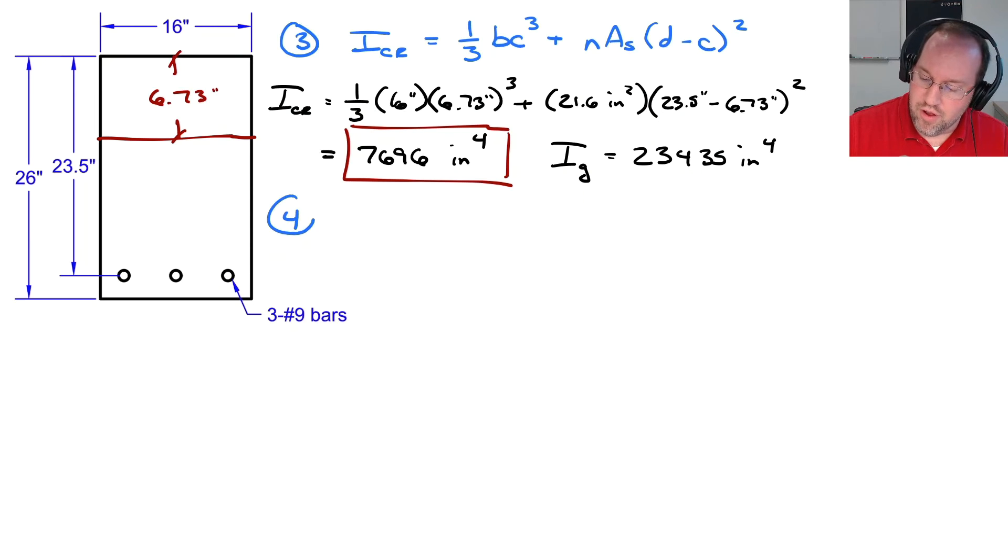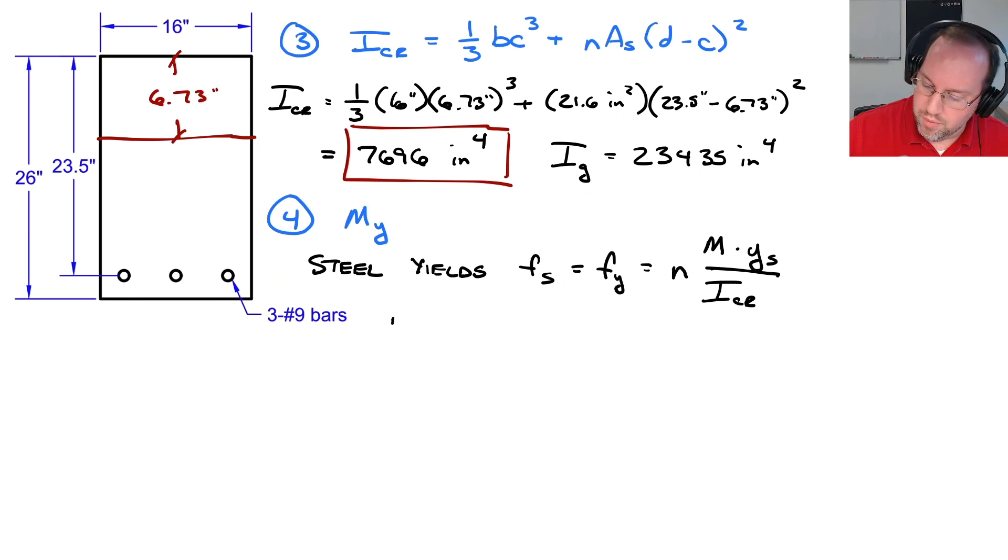Now that I have my moment of inertia, I want to find my yield moment M sub Y. So to do this, we need to consider what that yield moment represents. So the yield moment represents the time when my steel yields. So therefore, my stress in my steel Fs is equal to Fy. And we know that the stress in the steel for a linear section is N times the moment times the distance down to that steel, which we'll call Y sub S. And that's the distance measured from the neutral axis, not from the top of the section. And I'm going to divide this by my cracked moment of inertia I crack. So solving that expression, we can find that the moment, which I'll call MY in this case, is equal to Fy times I cracked divided by N, and this distance Y sub S is the distance from the neutral axis down to the steel. So that's just distance D minus C.